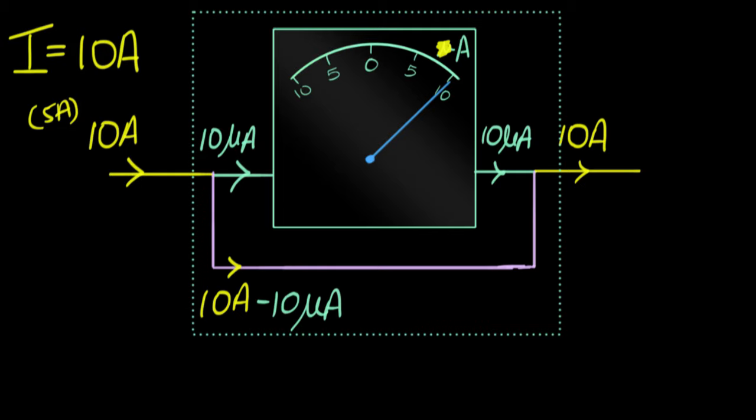All right, hopefully you've tried. But if not, don't worry, here's a clue. The amount of current that comes out of this branch will completely depend upon the resistance of this particular wire. Think about it. If this wire has a lot of resistance, then most of the current will just flow through the galvanometer and that thing is gonna get blown up.